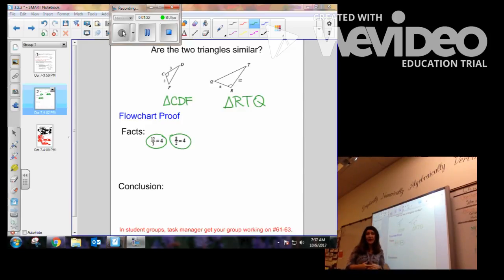Since those ratios are equal, I now know that those lengths are proportional. So I can use this fact and this fact to say, we went from 12 to 3, so we went R, T, to C, D. That ratio is equal to the ratio of 8, 2. So we could go R, Q, to C, F.